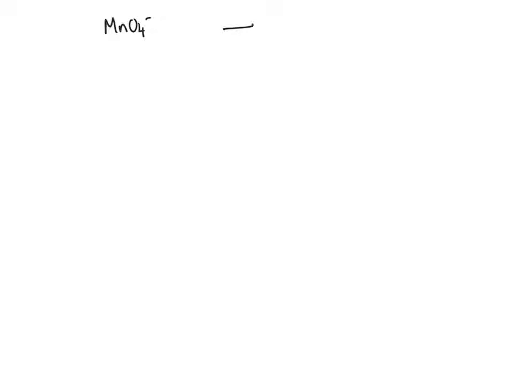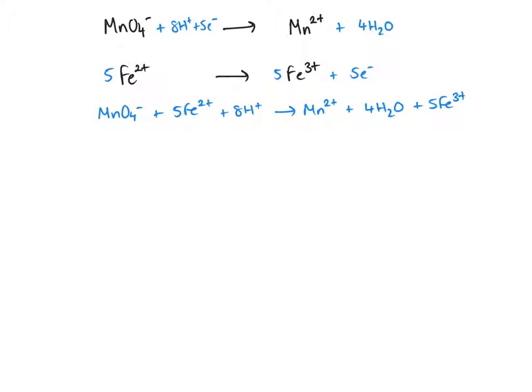You are expected to know that the manganate ion is reduced to Mn²⁺, and that the iron is oxidised to Fe³⁺. You are expected to be able to balance and combine those equations. As you can see, we've got a 1 to 5 ratio.